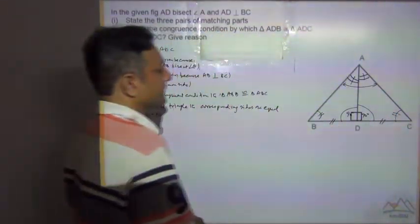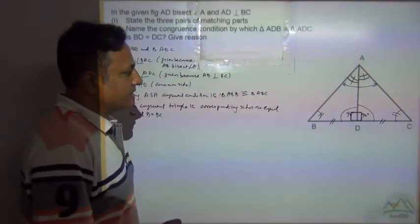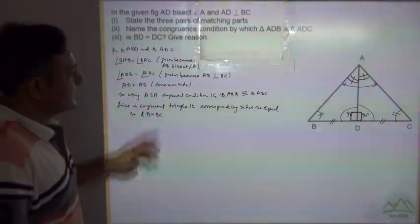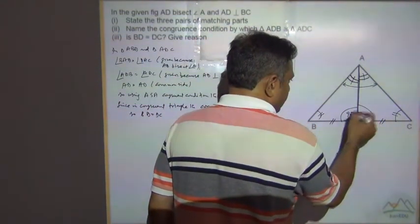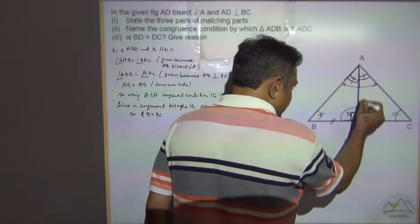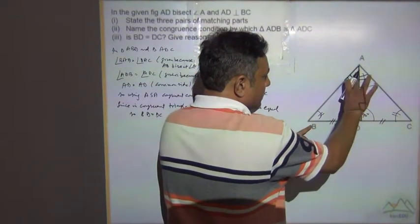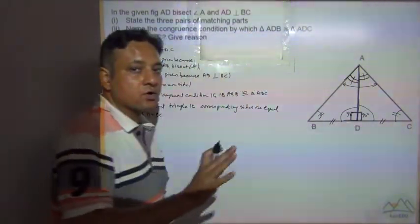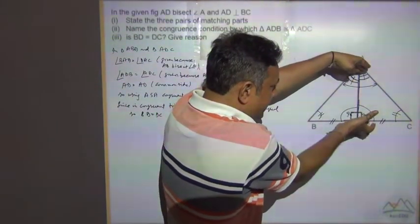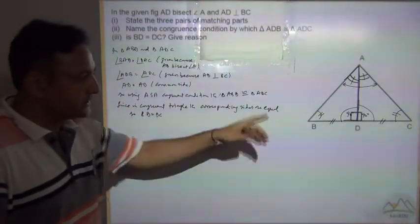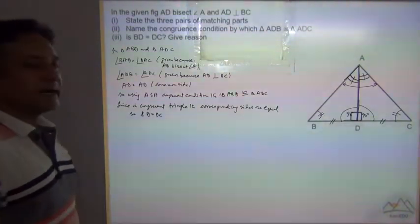An important point to always remember in congruence condition: when we say angle-side-angle, this is the angle, this is the angle, and this is the included side. We are not talking about this side. If this side is equal, this is not a congruent condition. The included angle should be equal, not the other side.